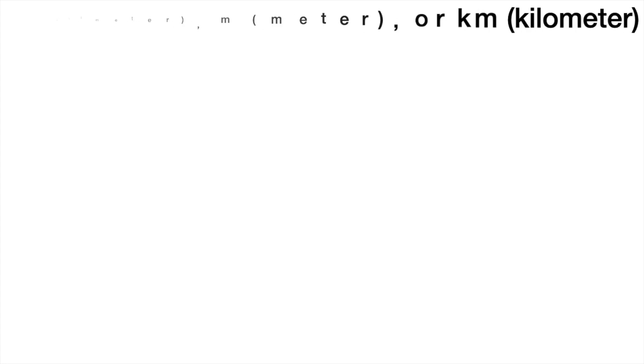So now, children, I want you to help me identify the more appropriate unit that can be used for the following objects. We're going to write CM for centimeter, M for meter, and KM for kilometer. Are you ready?